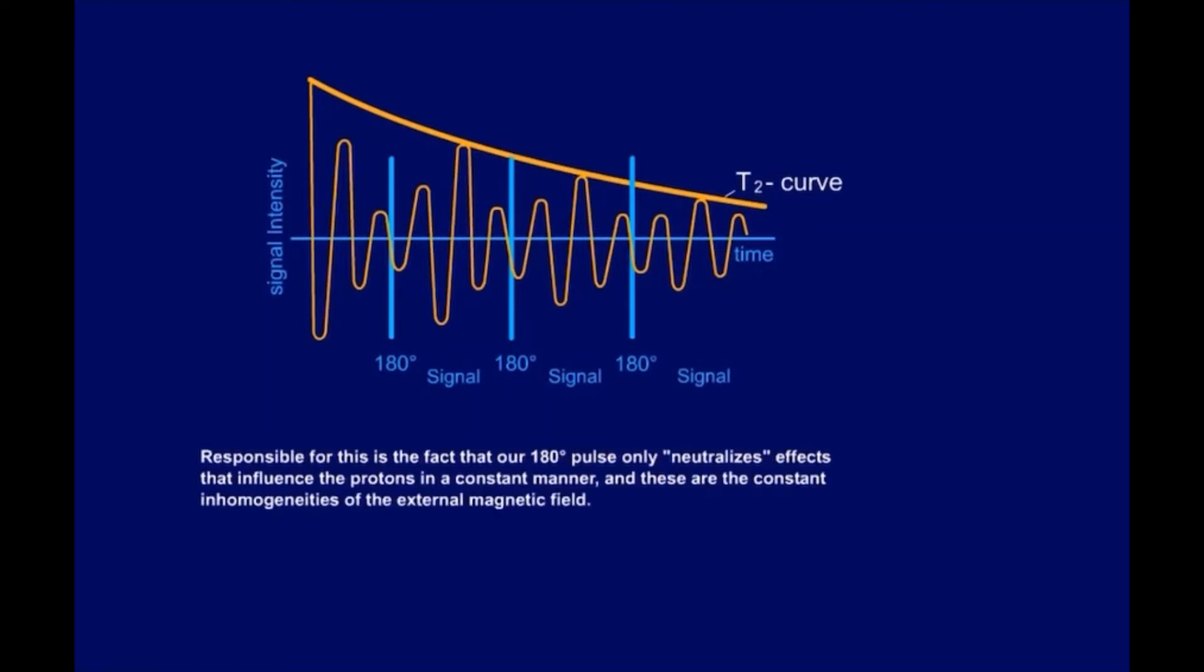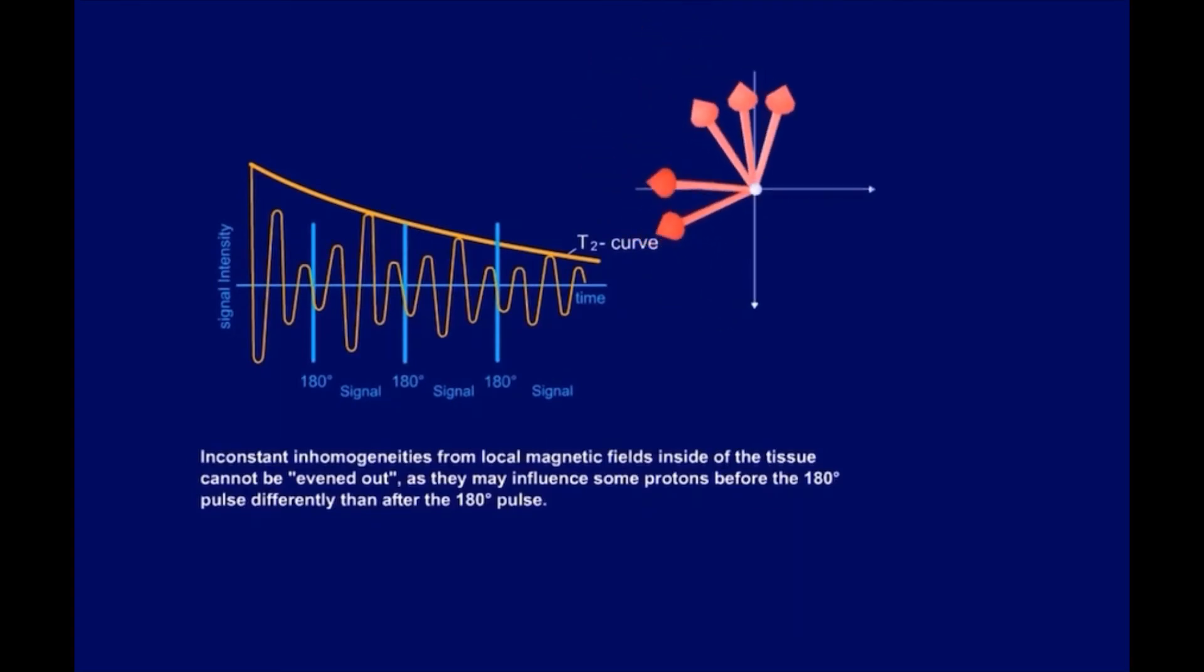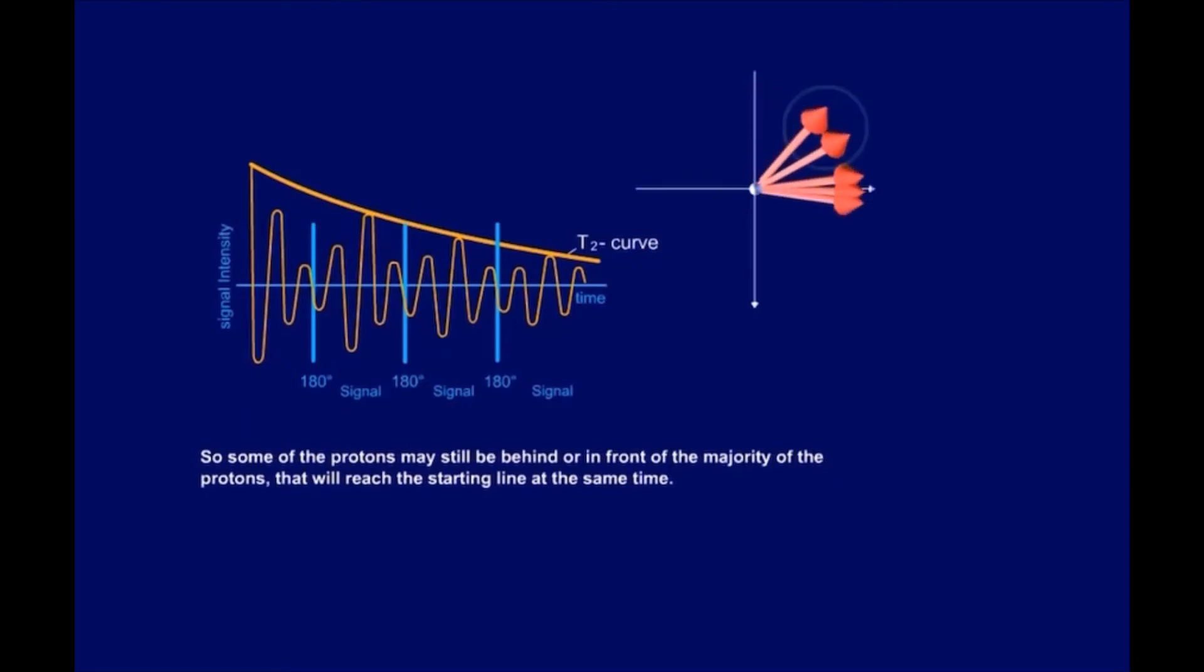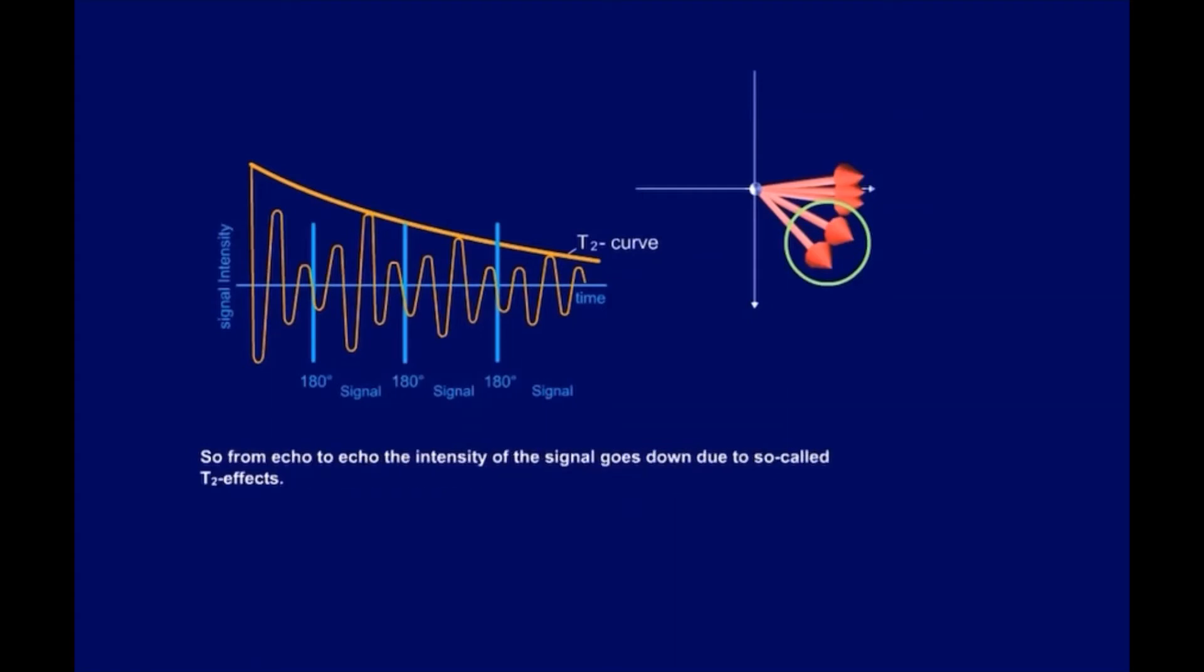Responsible for this is the fact that our 180-degree pulse only neutralizes effects that influence the protons in a constant manner. Inconstant inhomogeneities from local magnetic fields inside of the tissue cannot be evened out, as they may influence some protons before the 180-degree pulse differently than after the 180-degree pulse. So, some of the protons may still be behind or in front of the majority of the protons that will reach the starting line at the same time. So, from echo to echo, the intensity of the signal goes down due to so-called T2 effects.